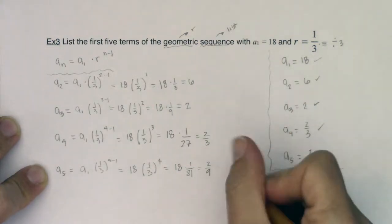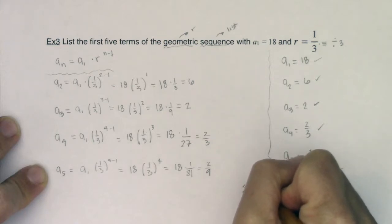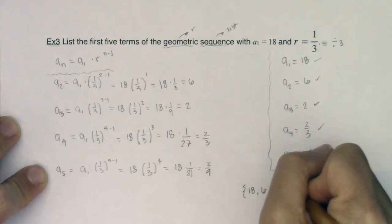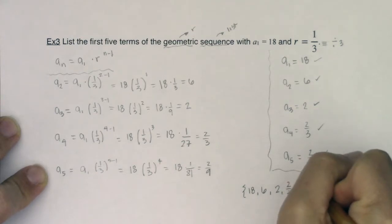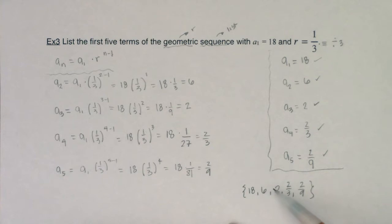So ultimately the first five terms of our sequence are 18, 6, 2, 2/3 and then 2/9. That is our geometric sequence and our common ratio is multiplying by 1/3 because you can see I'm really dividing by 3 to get from one term to the next term.